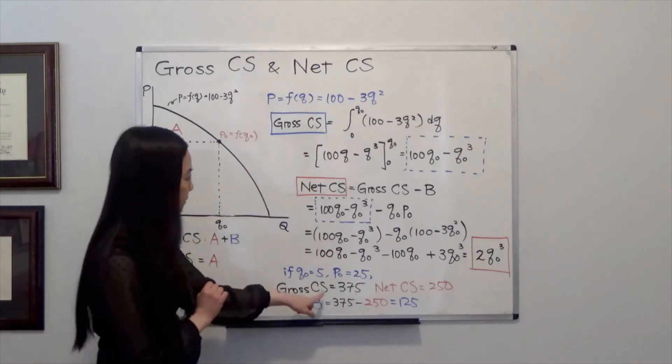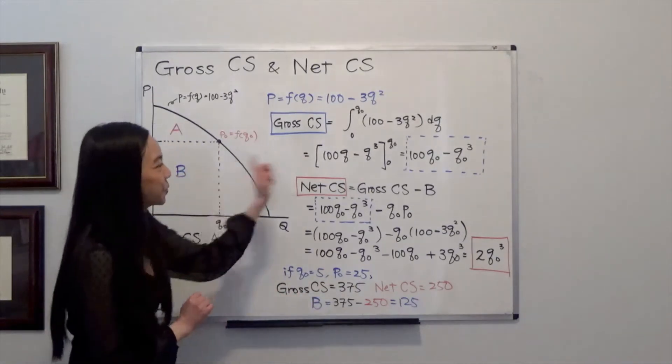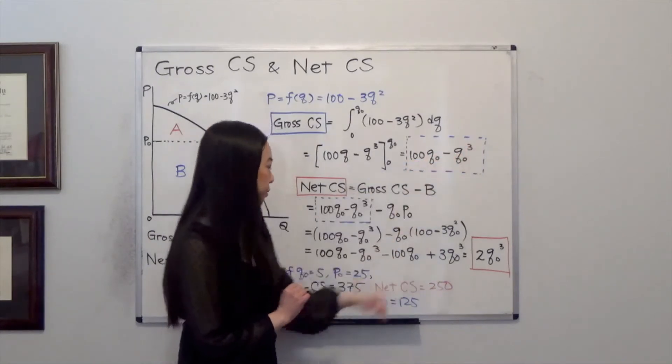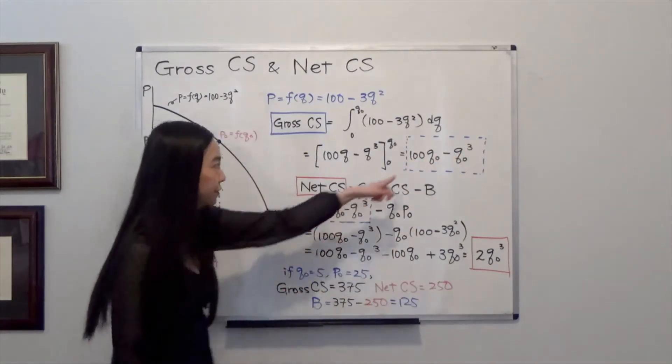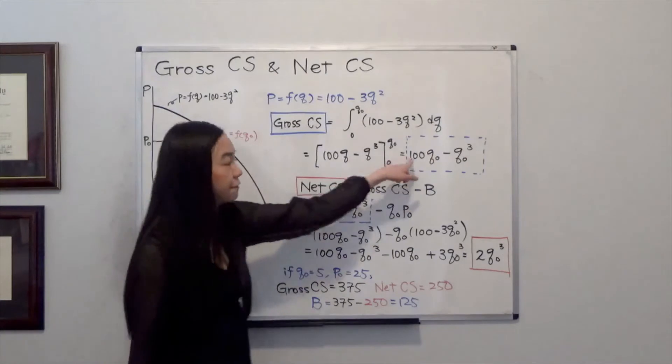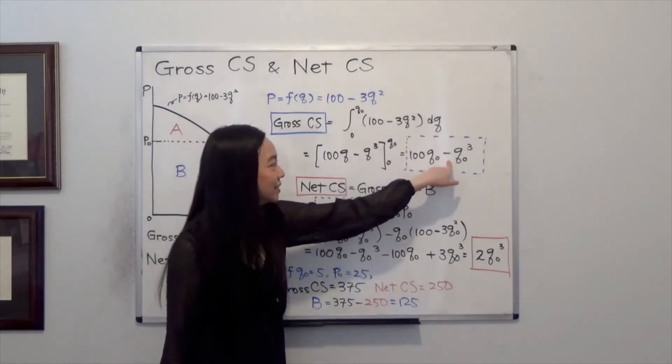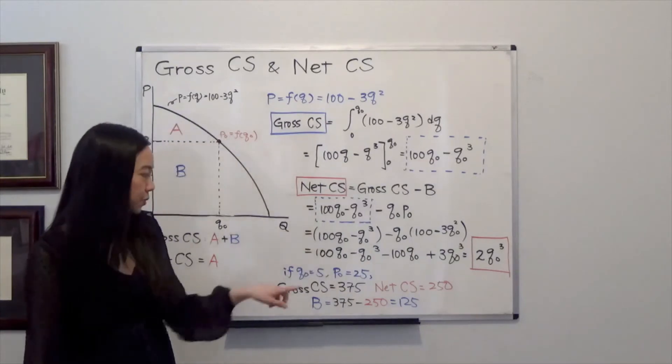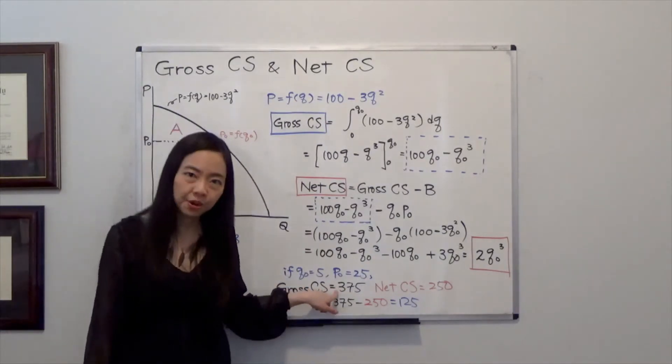And in that case, we can find gross consumer surplus. Gross consumer surplus is 100Q0 minus Q0 cubed. We plug in 5. Then that will be 500 minus 125. So in that case, your gross consumer surplus is equal to 375.